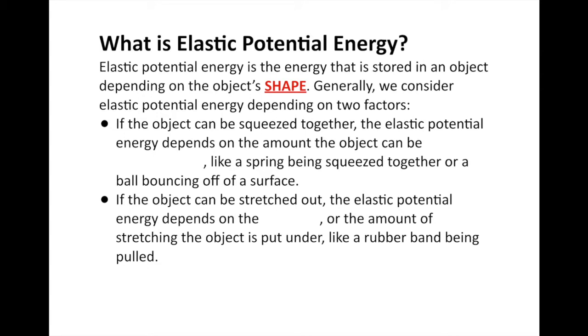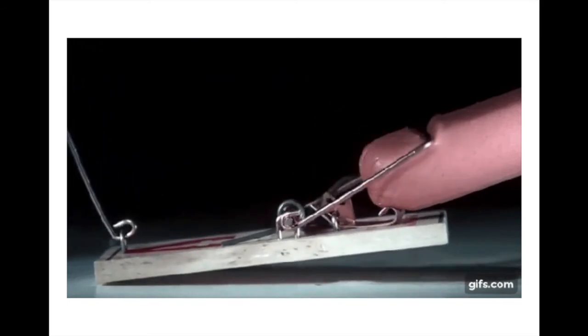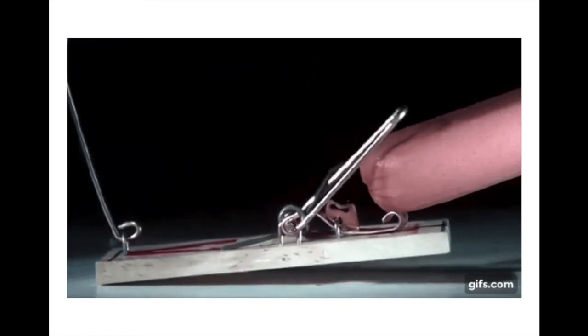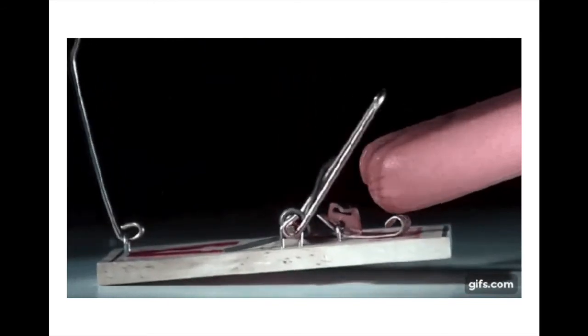We consider elastic potential energy as depending on two different factors. The first is if the object can be squeezed together — then the elastic potential energy depends on the amount the object can be compressed, like a spring being squeezed together. As you can see with a hot dog getting sliced by a mousetrap, the spring is where the compression is happening. Whenever you pull back the mousetrap, the energy is stored in that spring, and when it lets go, the mousetrap flies over. Similarly, when a ball bounces and hits the wall, it actually compresses — that's elastic potential energy. As it's hitting the ground it's compressing, and when it bounces off, it lets go and that energy is released.